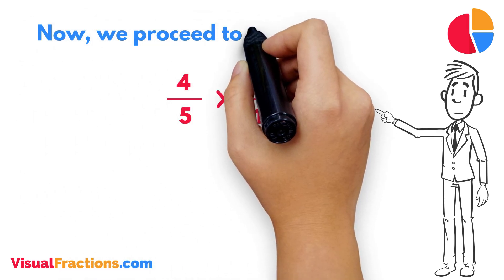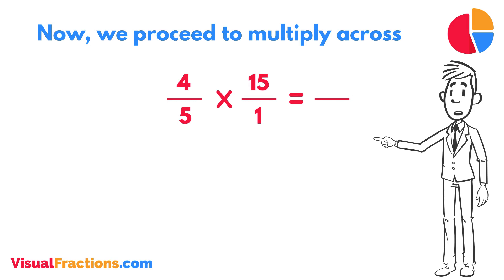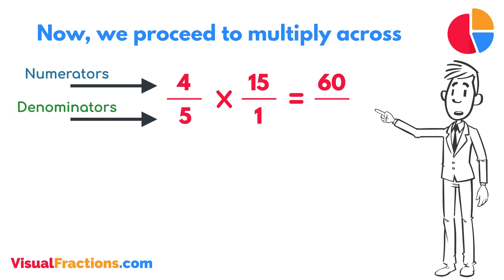Now, we proceed to multiply across. First, multiply the numerators, 4 times 15 equals 60. Next, multiply the denominators, 1 times 5 equals 5.